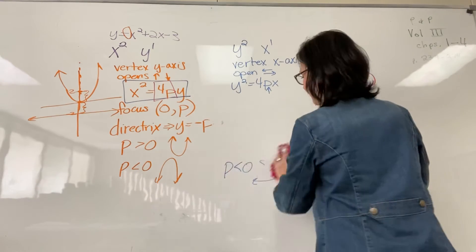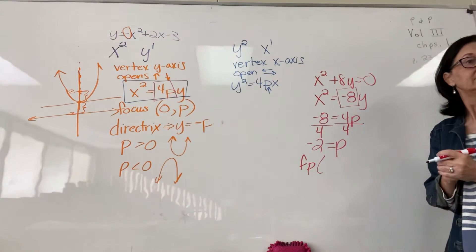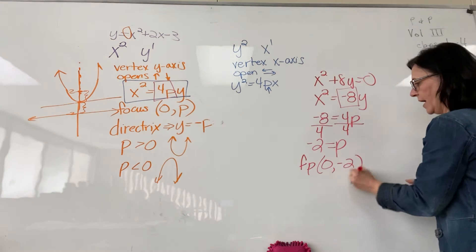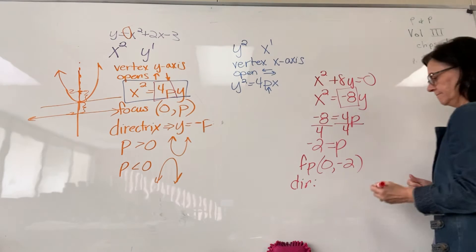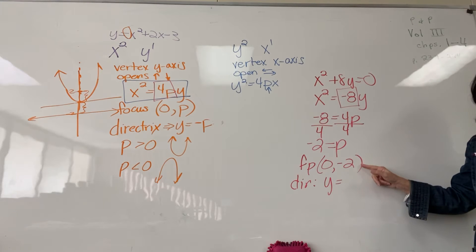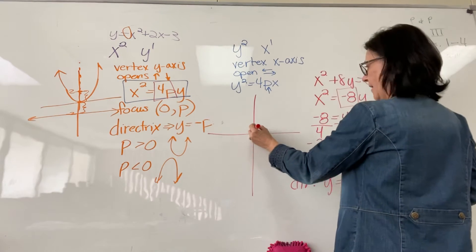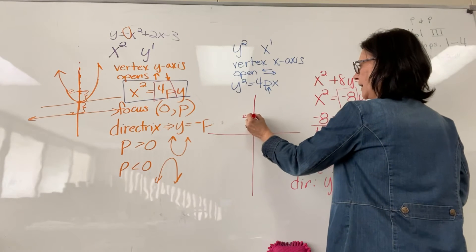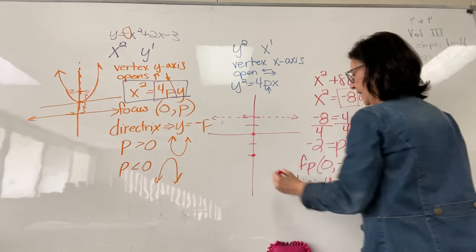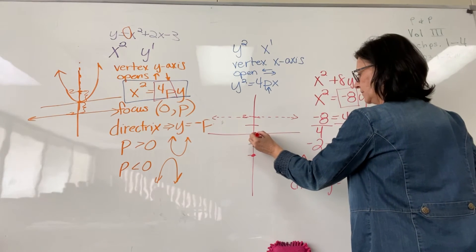It's going to open down. My focus point is going to be (0, negative 2). My directrix is y equals the opposite, which is y equals 2. My vertex is still at the origin. I'm going to have a directrix up at y equals 2, my focus point down at negative 2, and my parabola will open down.